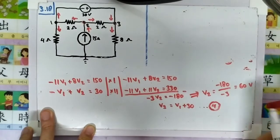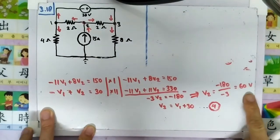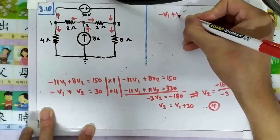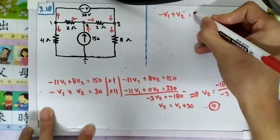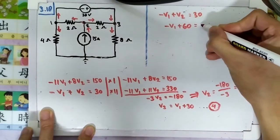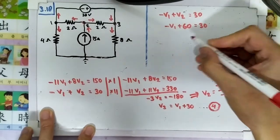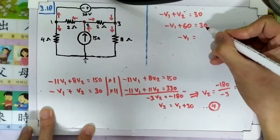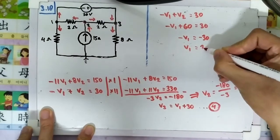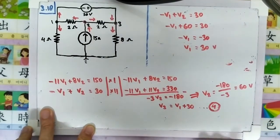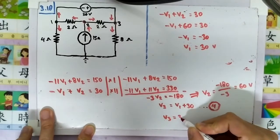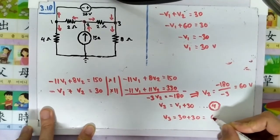We substitute V2 = 60 back into equation 6: -V1 + 60 = 30, so -V1 = -30, giving V1 = 30 volts. Then using equation 4, V3 = V1 + 30 = 30 + 30 = 60 volts.